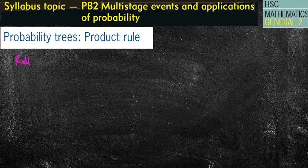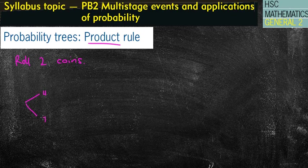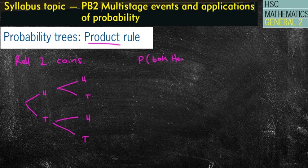Let's say we roll two coins. We've done this question before. We're going to look very briefly at the product rule first. My first coin is going to have a head or a tail, and my second coin is going to have a head or a tail. We've looked at questions like this already, asking what's the probability that I get both heads. That was from the very first lesson of this unit.